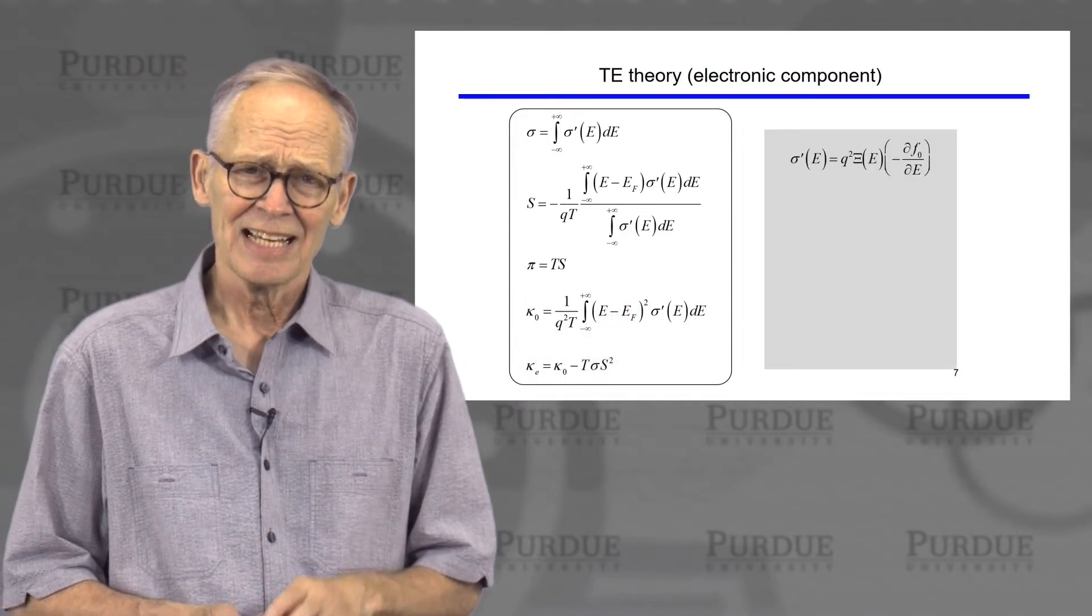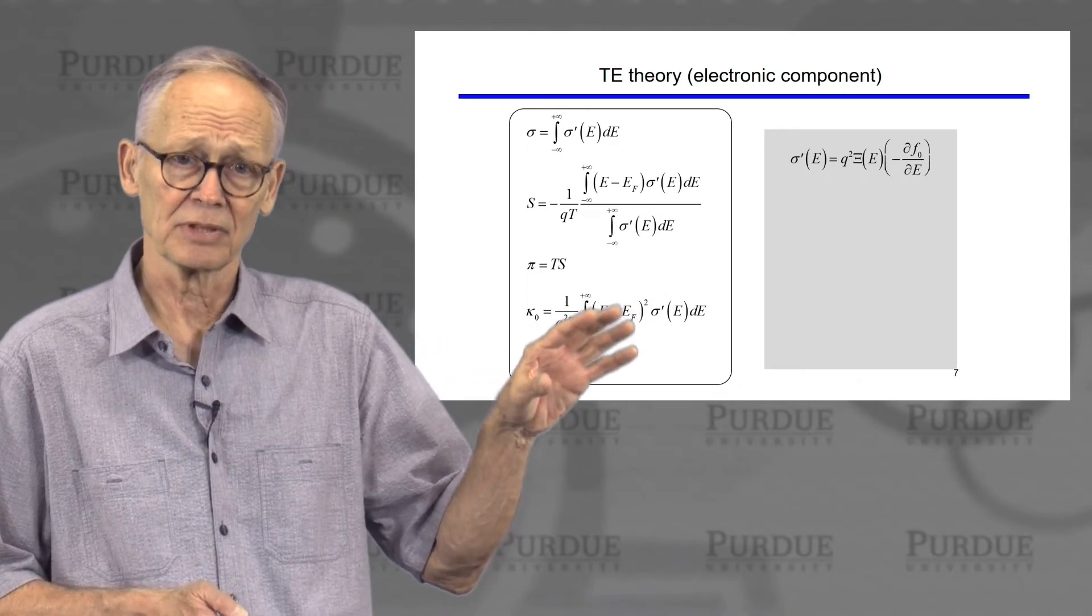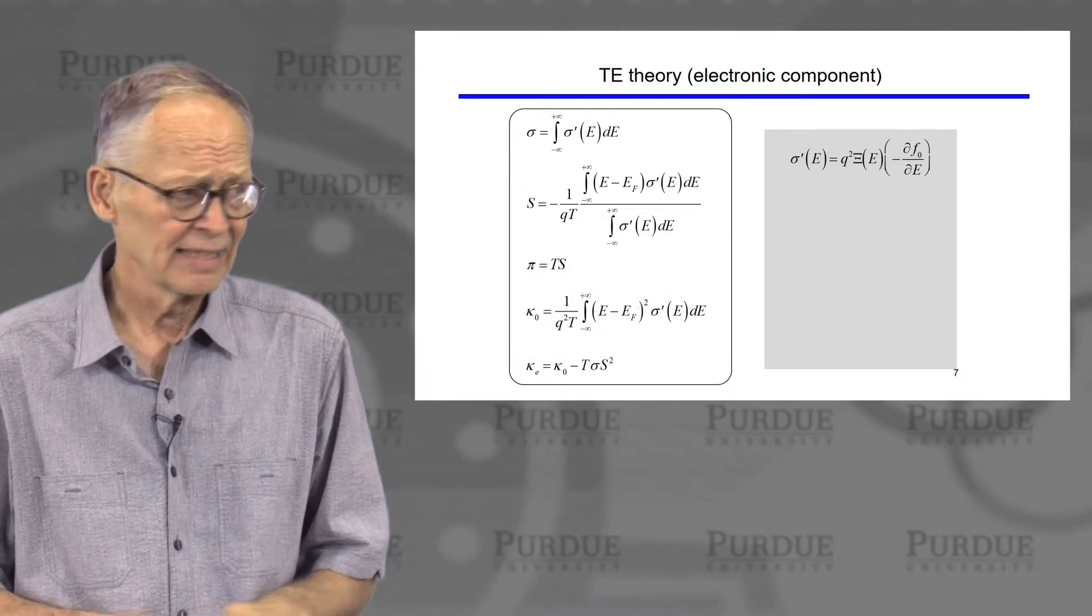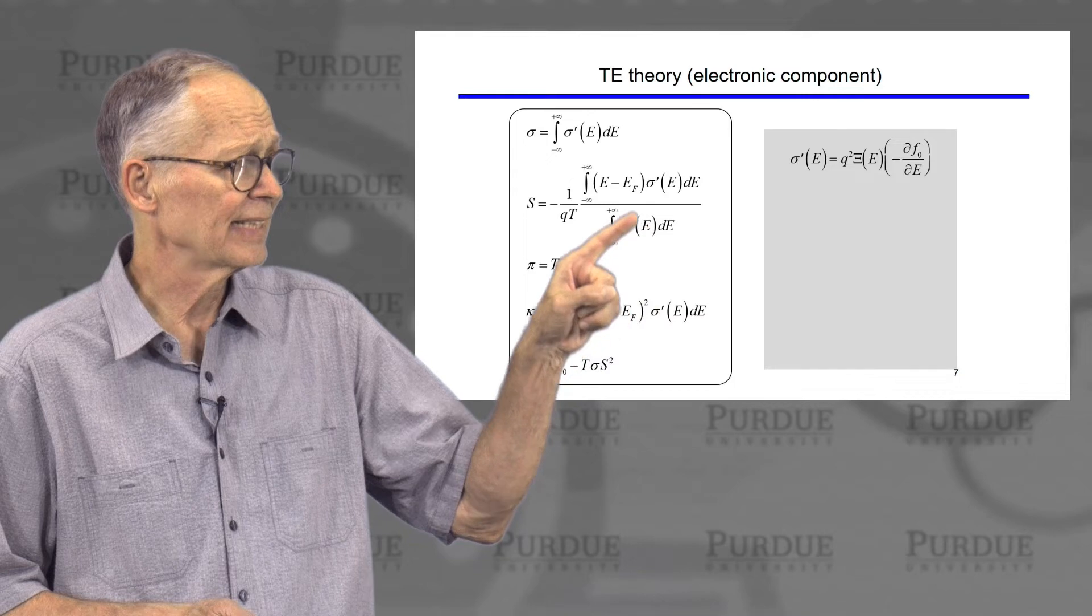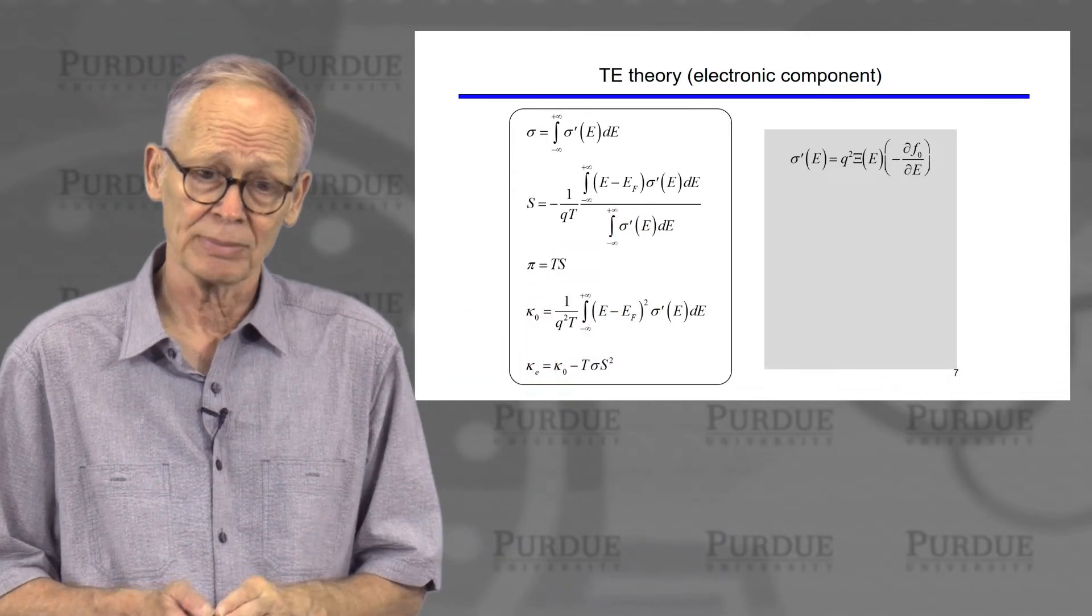We'll talk about these equations, but the standard way of deriving these is from the Boltzmann transport equation. Things can get a little bit complicated. This quantity, sigma prime, is known as the differential conductivity. We'll talk more about that later.